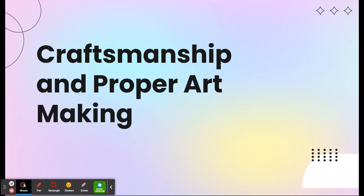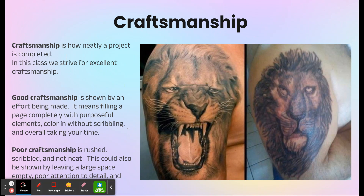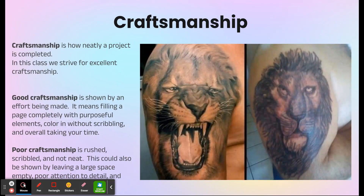Now we're going to talk about craftsmanship and proper art making. Craftsmanship is a big thing that's going to be taught in this class — it's how neat a project is completed, and I'm going to talk about it a lot through the entire course. I want to be seeing good or excellent craftsmanship, represented by a tattoo of a lion that actually looks like a lion. It means filling the page completely with purposeful elements, not just rushing through something, no scribbling, and taking your time.